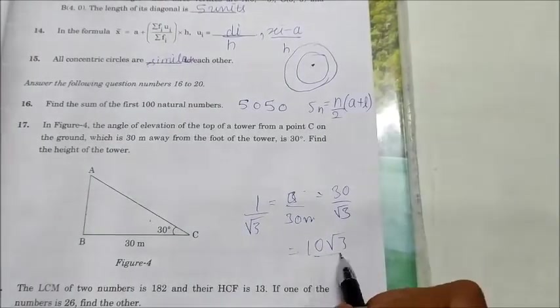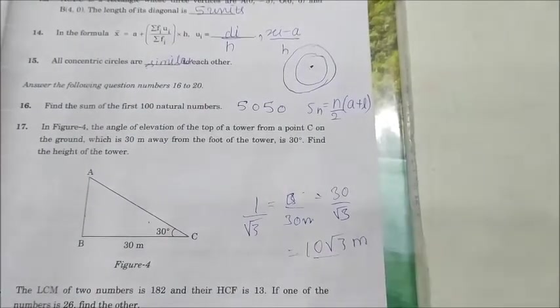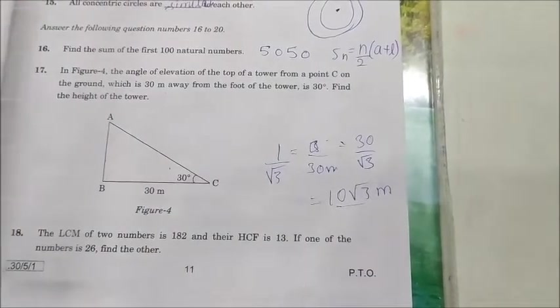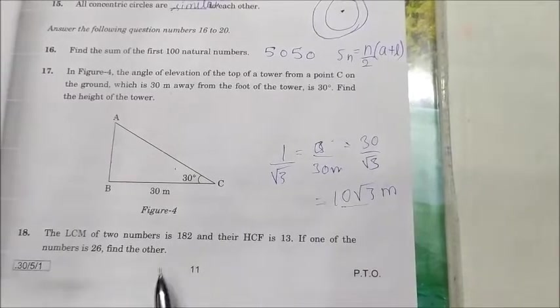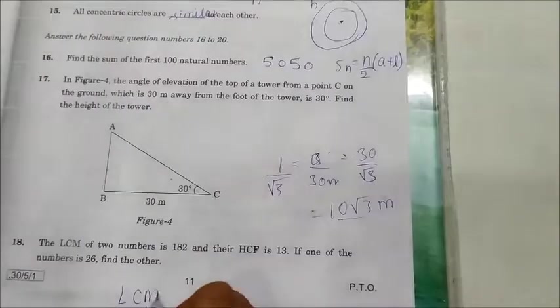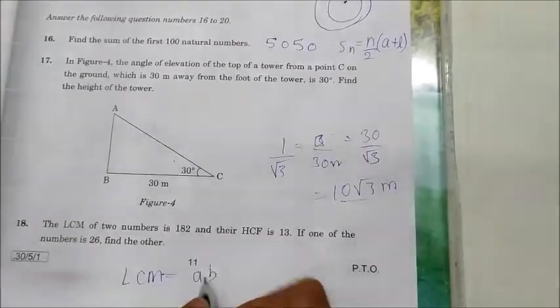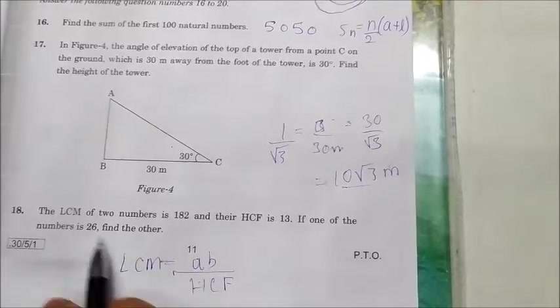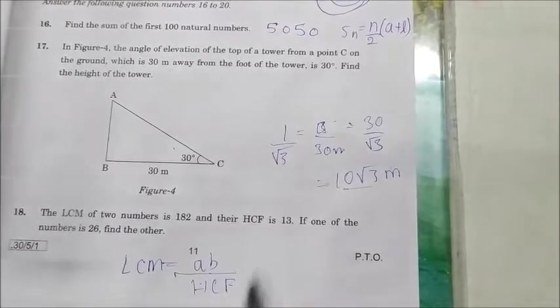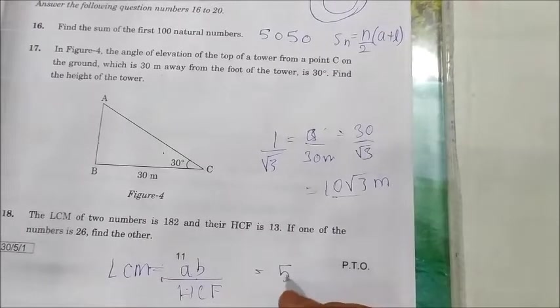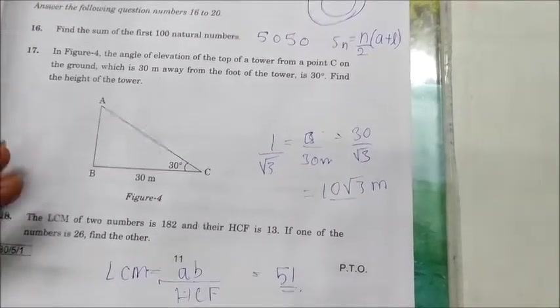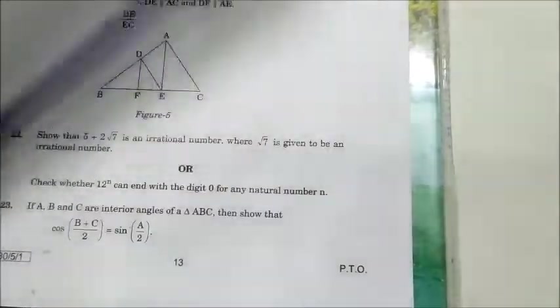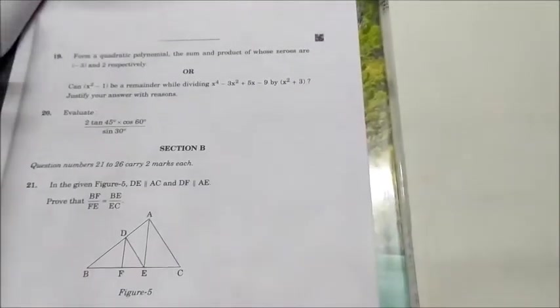Next question is: The LCM of two numbers is 182 and their HCF is 13. If one of the number is 26, find the other number. You need to put it in the formula: LCM = product of numbers/HCF. When you will put the values a = 26, LCM = 182, and HCF = 13, you will get the answer... Sorry, you will get the answer 91. That is the answer for the question.